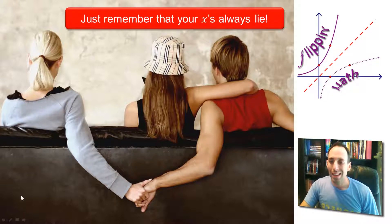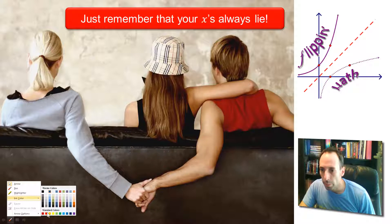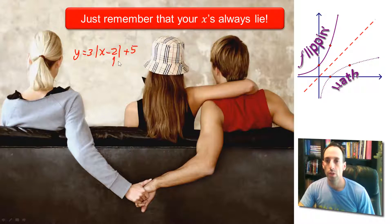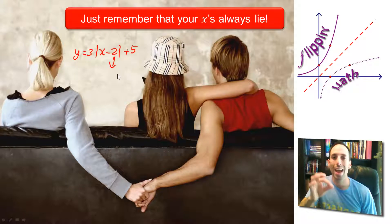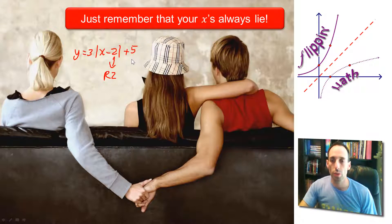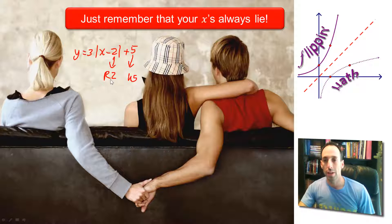The girl, the girl right there in the hat, she's probably telling the truth. So let's put it in red. Y equals 3 times the absolute value of x minus 2 plus 5. So this negative 2, it's associated with the x. X's always lie. So instead of that going to the left 2, it's going to lie to you. It's actually going to go to the right 2. And the positive 5, it's associated with the y. The y's always tell the truth. That's going to go up 5.